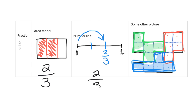So there are three different ways to show two-thirds: the area model, the number line, and a grid divided into three equal pieces. They don't all look the same, but they're equal sized — each is five squares — and we shaded in two of them.